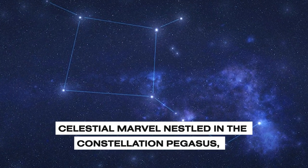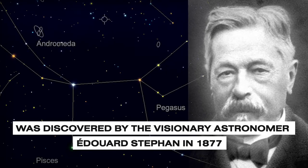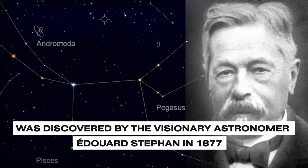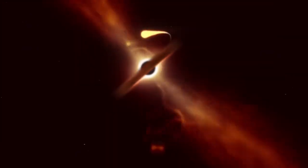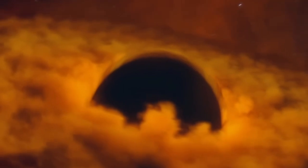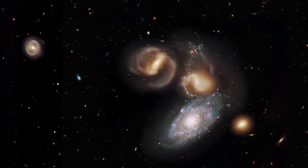Stefan's Quintet, a celestial marvel nestled in the constellation Pegasus, was discovered by the visionary astronomer Eduard Stefan in 1877. Now, with the JWST as our guide, we embark on a journey of cosmic revelation, unraveling the mysteries of galactic interactions and illuminating the path to a deeper understanding of our cosmic origins. Get ready for a cosmic adventure that will leave you in awe, as Webb unveils the hidden wonders of Stefan's Quintet and so much more.